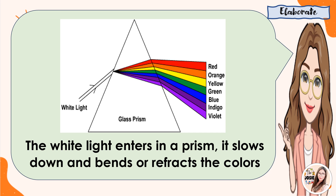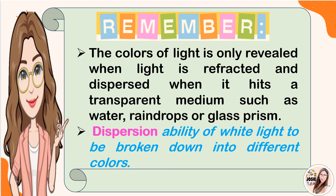That's why it turns out the colors red, orange, yellow, green, blue, indigo, and violet. Here are the things that you should remember: the colors of light are only revealed when light is refracted and dispersed when it hits a transparent medium such as water, raindrops, or glass prism. Dispersion is the ability of white light to be broken down into different colors such as red, orange, yellow, green, blue, indigo, and violet.